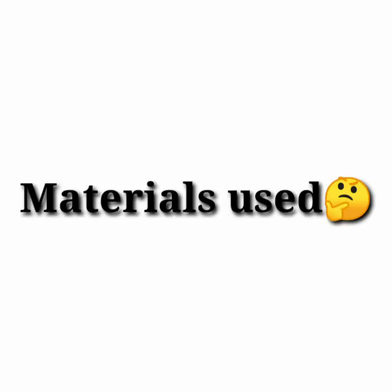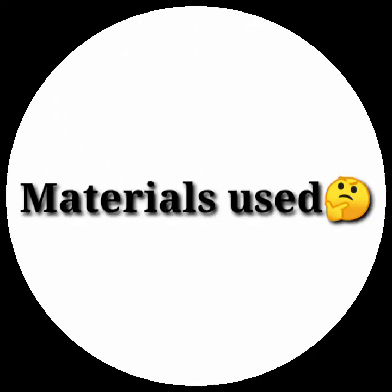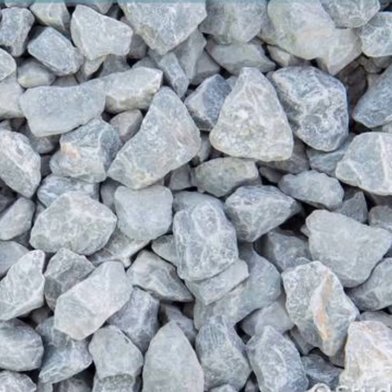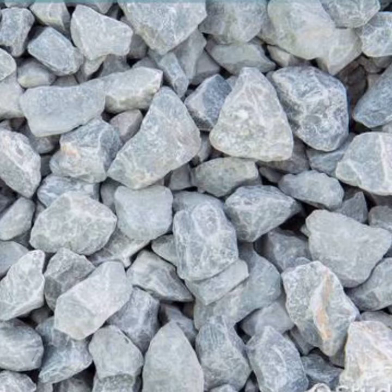The materials used in PCC: the first is coarse aggregate. Coarse aggregate used in PCC must be of hard broken stone of granite or similar stone, free from dust, dirt, and other foreign matters. The stone ballast shall be 20 mm in size and smaller. All coarse material should be retained on a 5 mm square mesh and shall be well graded so that the voids do not exceed 42%.